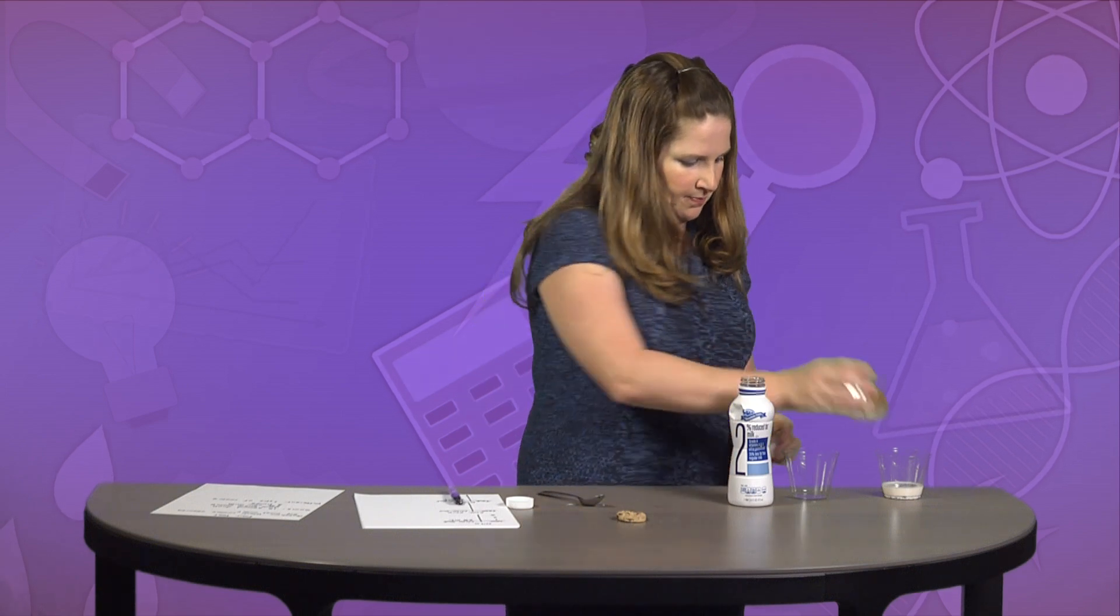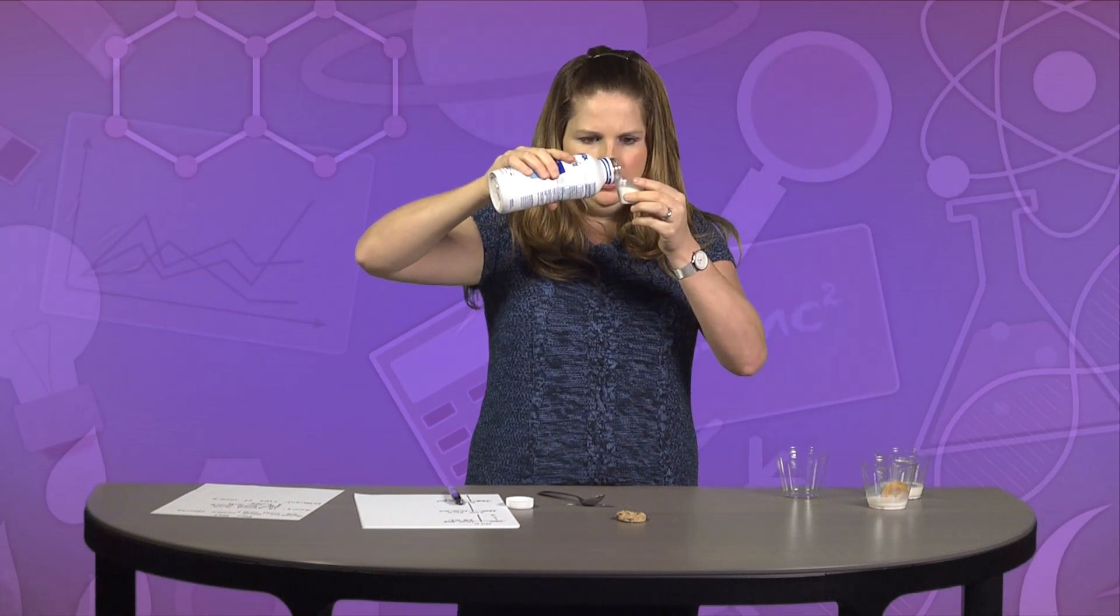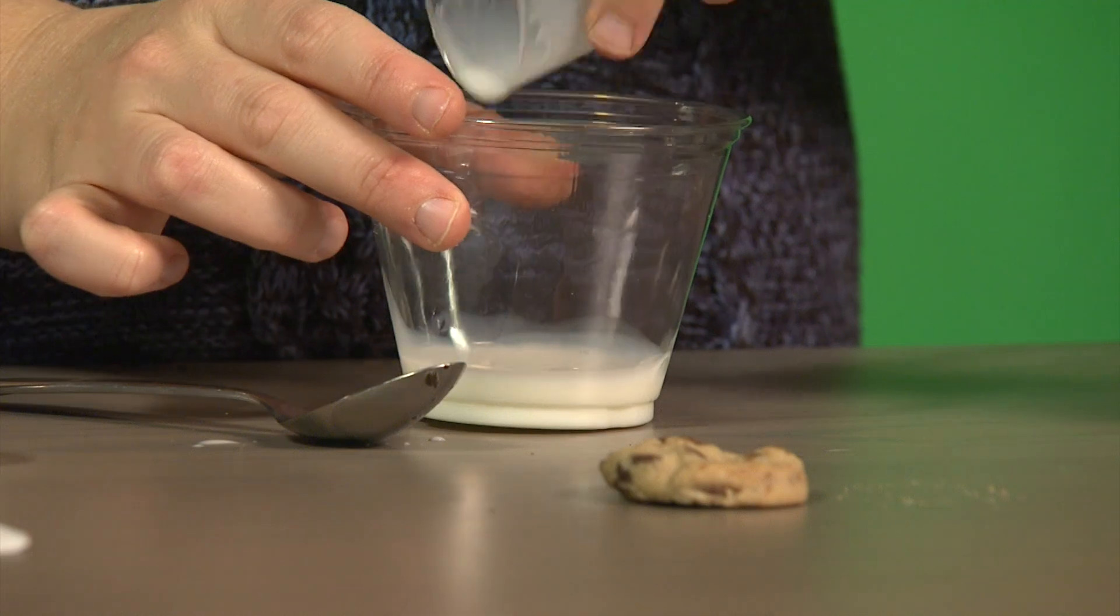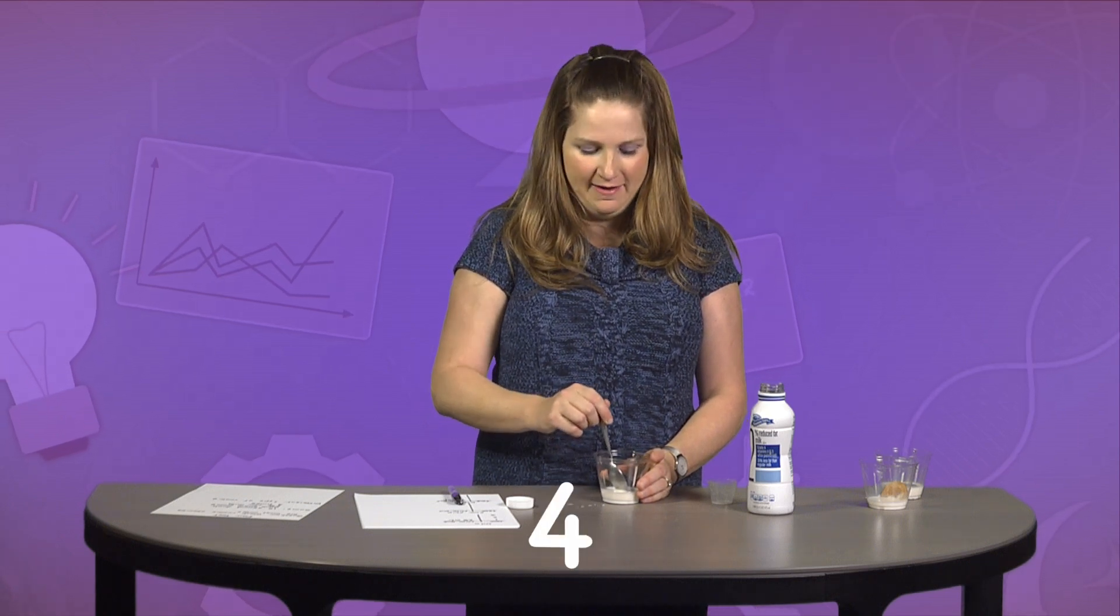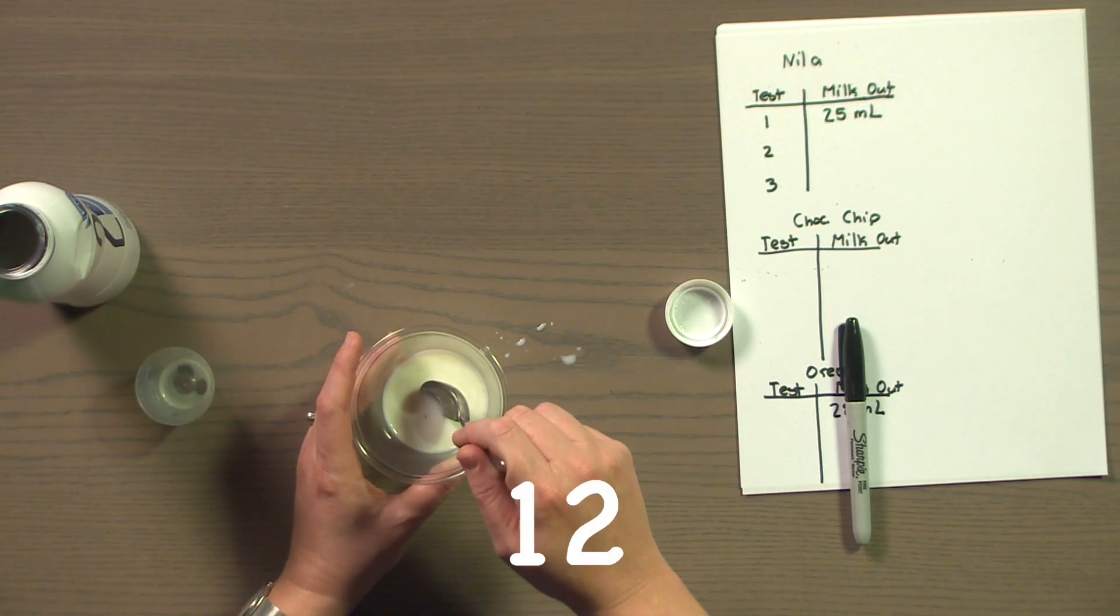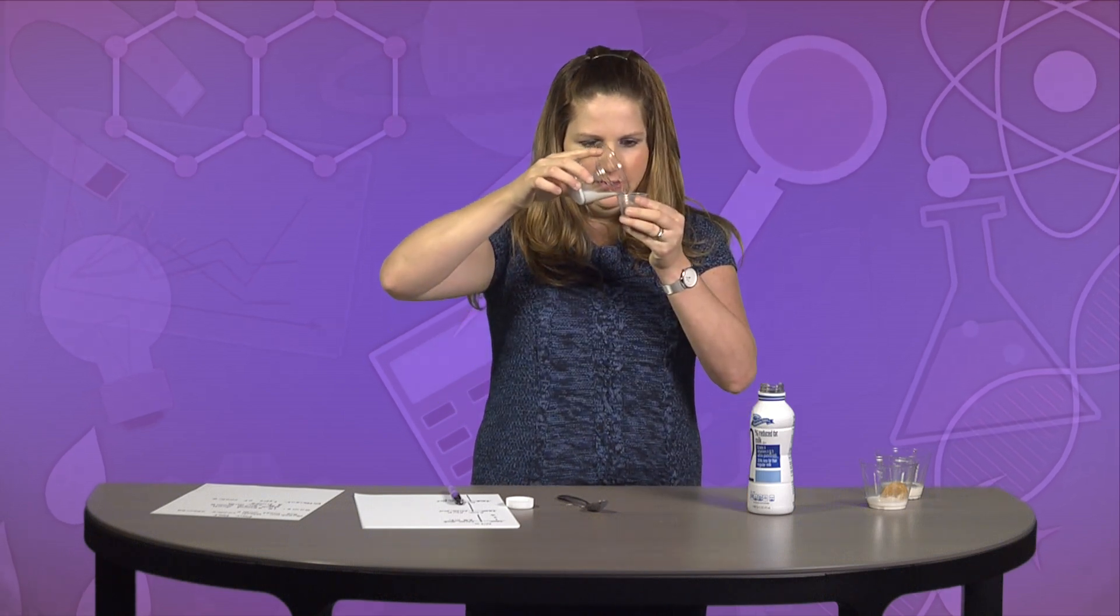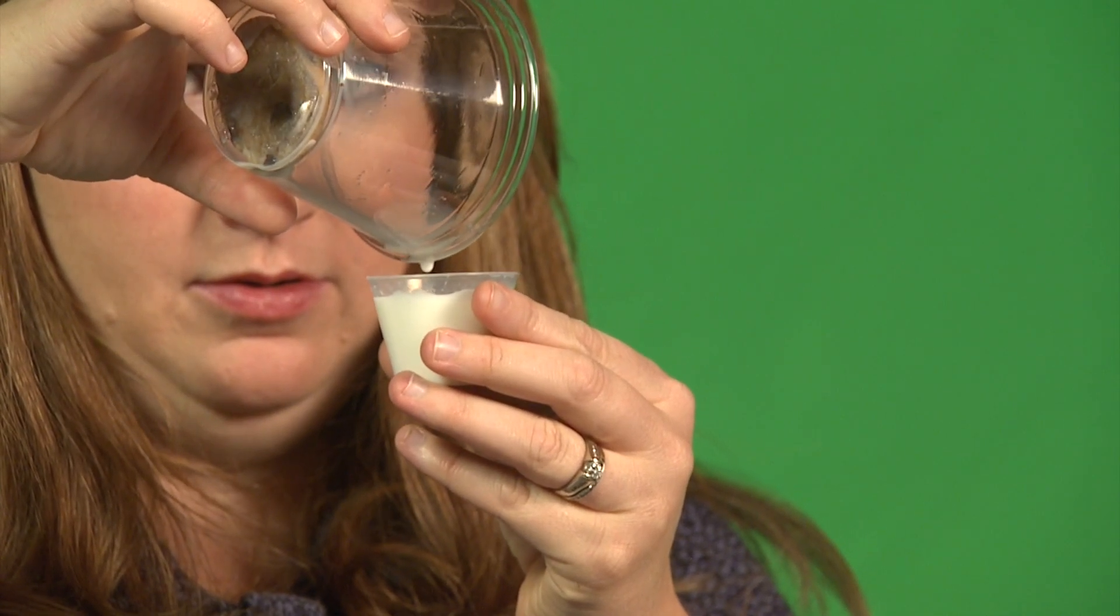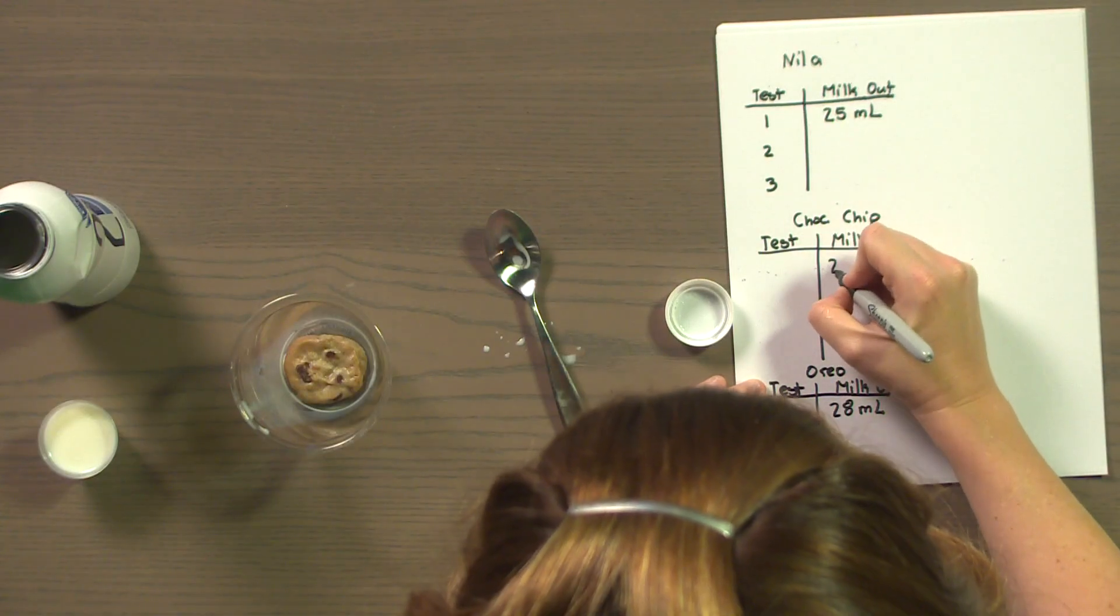That leaves our chocolate chip cookie. Once again, starting with my 30 milliliters, pouring it into my cup. Here we go. Ready? 1, 2, 3, 4, 5, 6, 7, 8, 9, 10, 11, 12, 13, 14, 15. And pouring. That one got out 29 milliliters of milk.